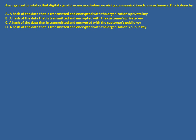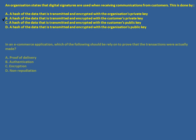An organization states that digital signatures are used when receiving communications from customers. Since customers are the sender, what is required is the private key of the sender — hence the customer's private key. The hash of the data is transmitted and encrypted with the customer's private key. In an e-commerce application, to prove that transactions actually took place, the answer is non-repudiation, which is the strongest evidence of a transaction.